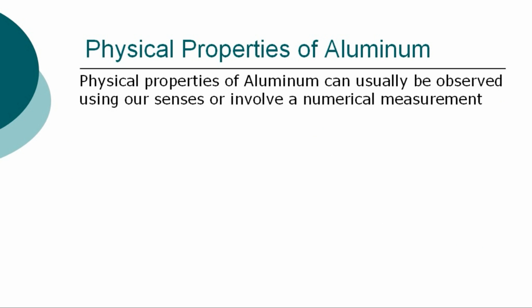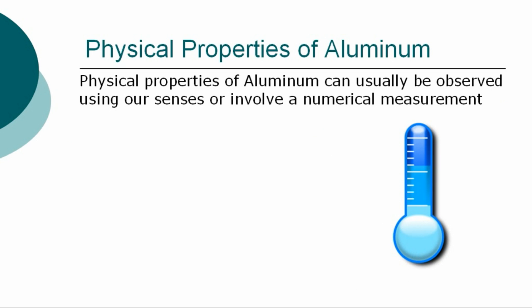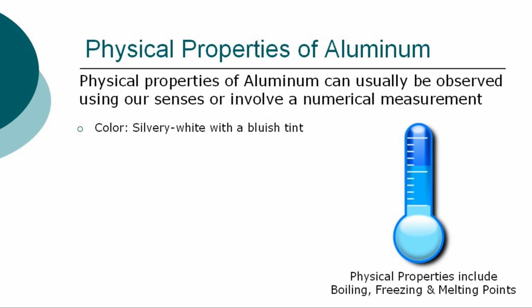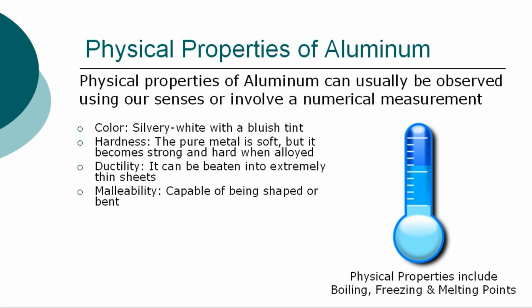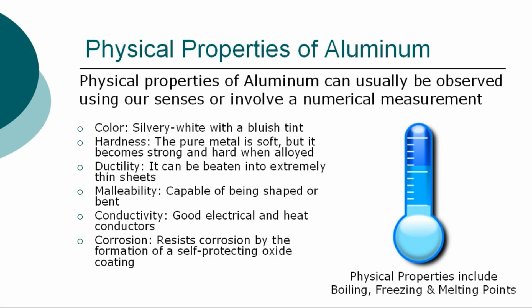The more specific physical properties of aluminum can usually be observed using our senses or involve a numerical measurement. The physical properties of aluminum are: color — silvery white with a bluish tint; hardness — the pure metal is soft, but it becomes strong and hard when alloyed; ductility — it can be beaten into extremely thin sheets; malleability — capable of being shaped or bent; conductivity — good electrical and heat conductors; corrosion — resist corrosion by the formation of a self-protecting oxide coating.